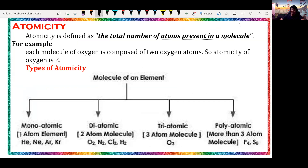The total number of atoms present in a molecule is called its atomicity. For example, oxygen is composed of two oxygen atoms — it is present in nature in the form of O2. That means an oxygen molecule contains two oxygen atoms, therefore its atomicity is two.